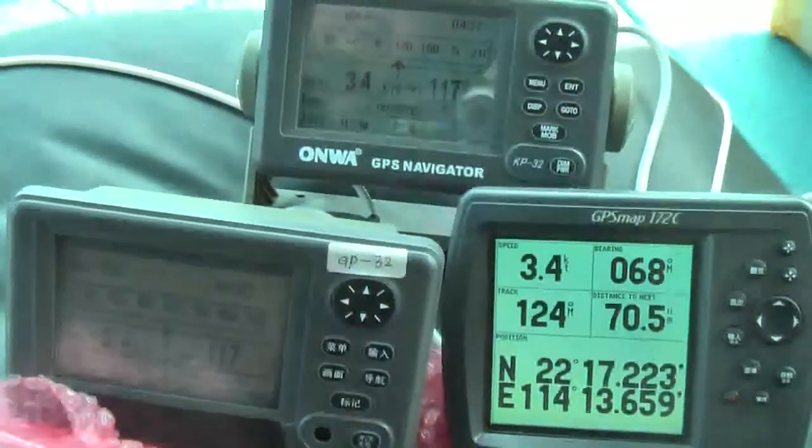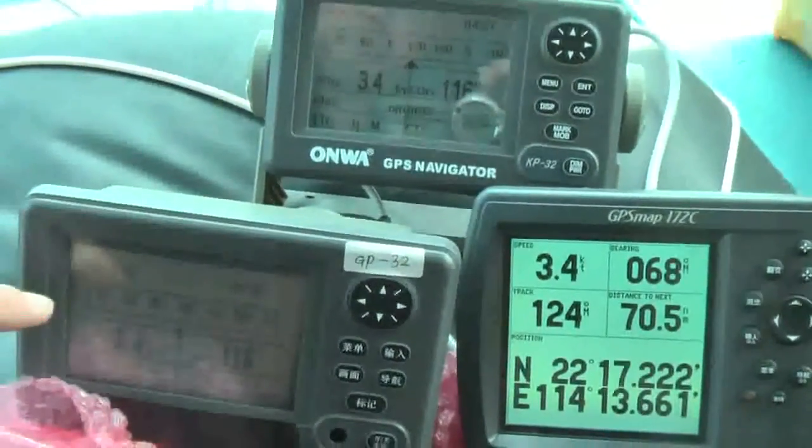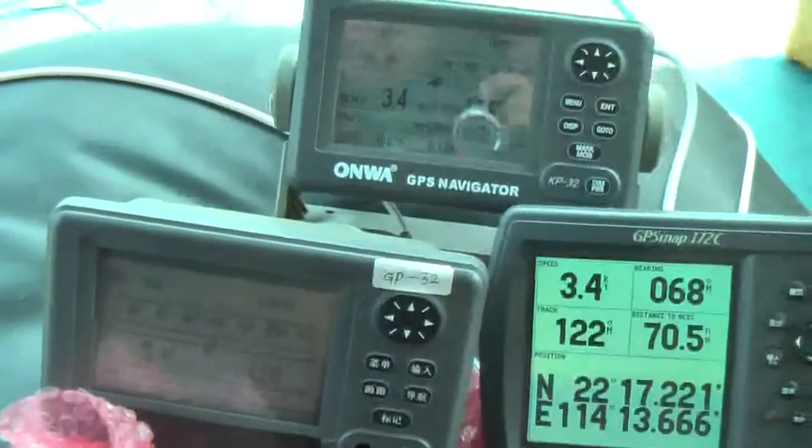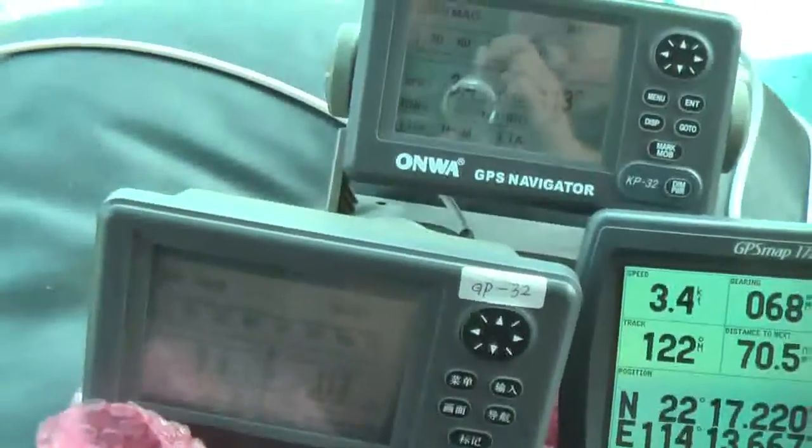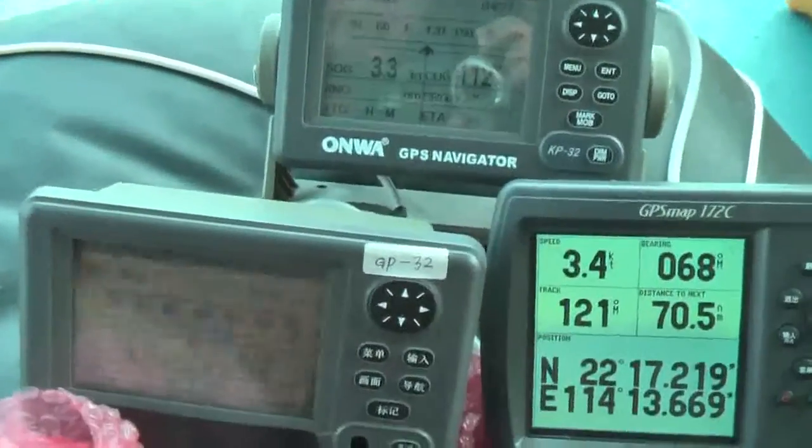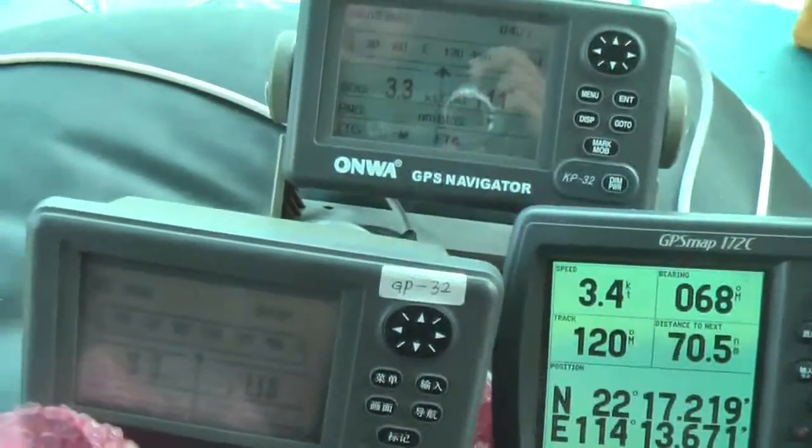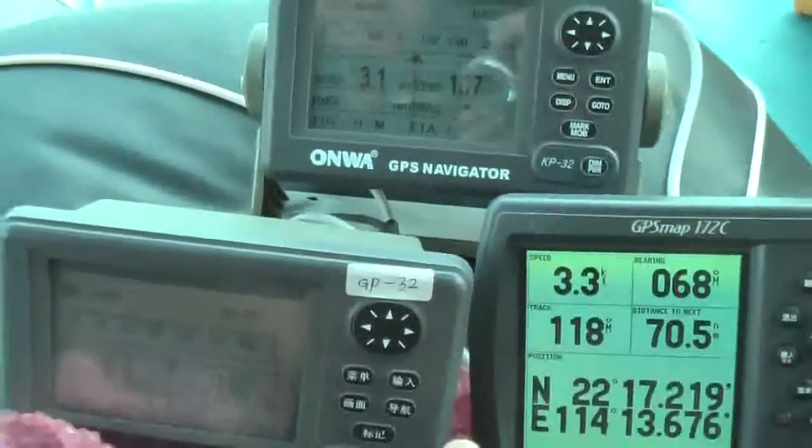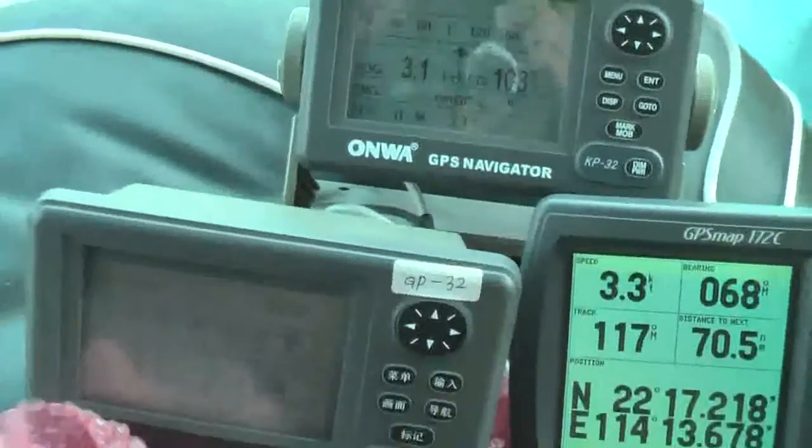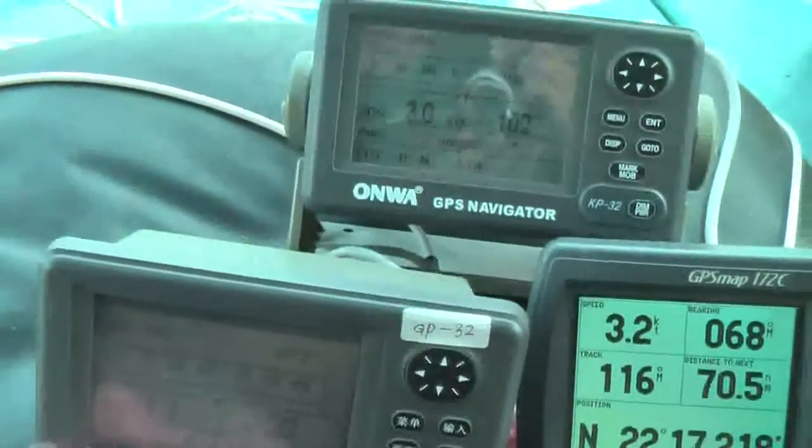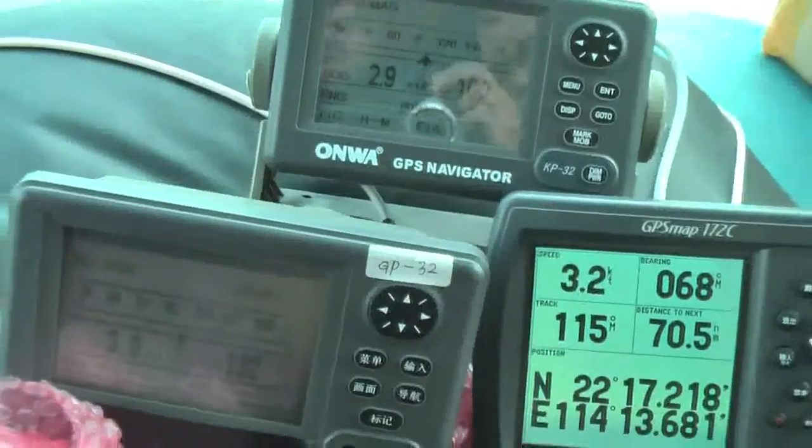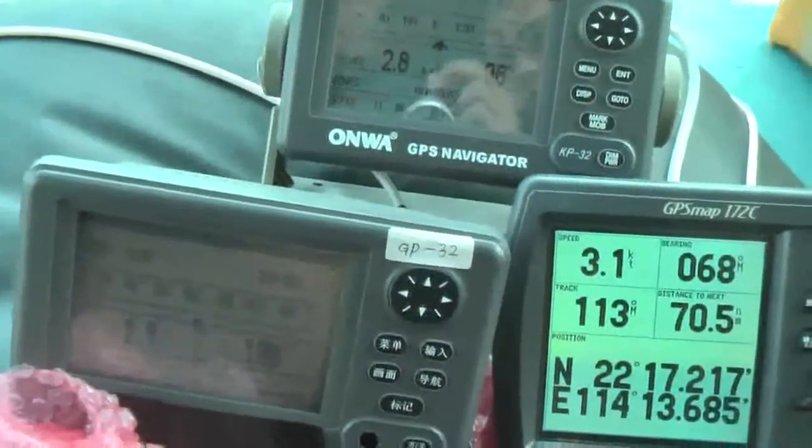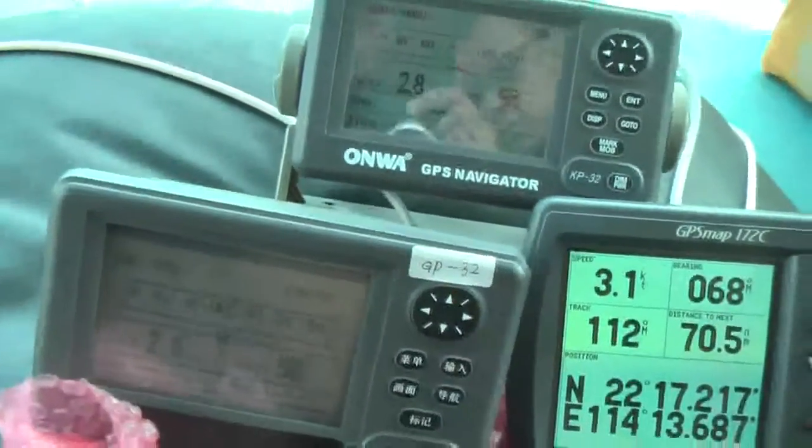It's so steep. The KP-32 and the GP-32, the speed and the SOG and the COG is quite stable compared to Garmin. The Garmin can also catch-up, but this is rather slow. Now we slow down to 2.9 and about 3 knots.